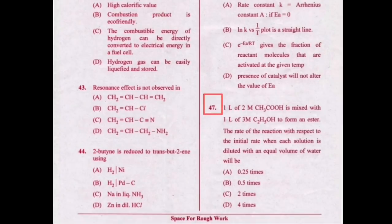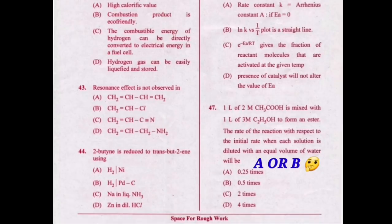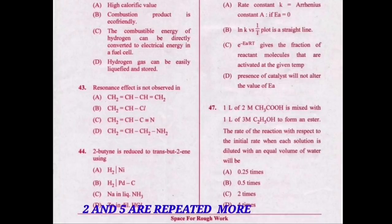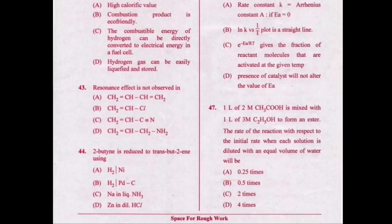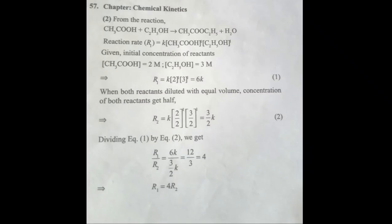In this question, the probability of the correct option being option A and option B — both are having a similar end. To decide the correct answer, we take the help of other options. The most repeated numbers are 2 and 5. Option C supports option A. Therefore our correct answer will be option A. If you're solving without tricks, imagine how much you have to do — you can verify your answer here.